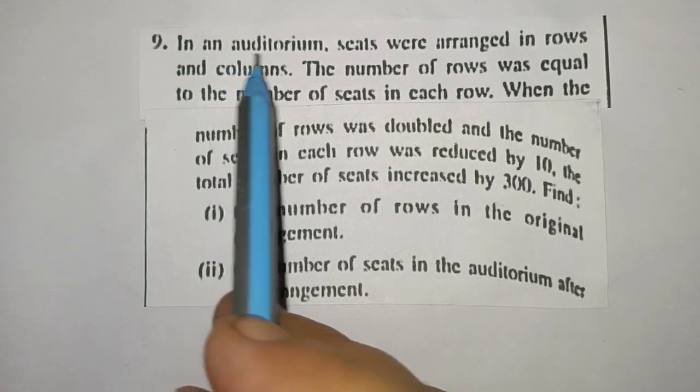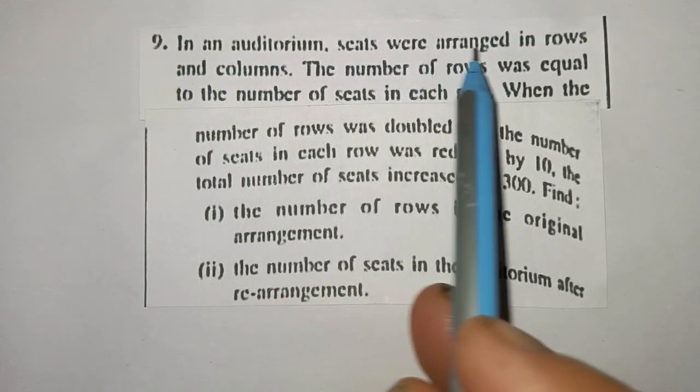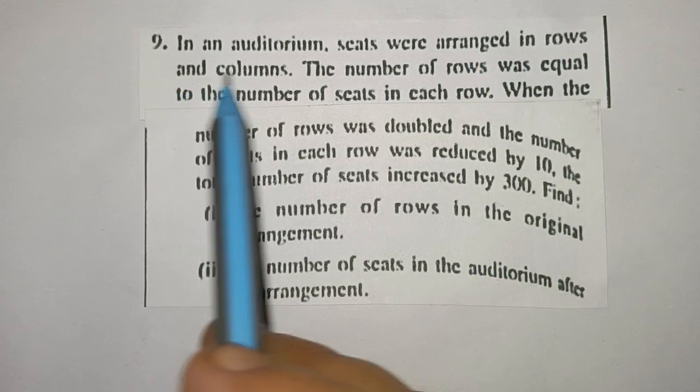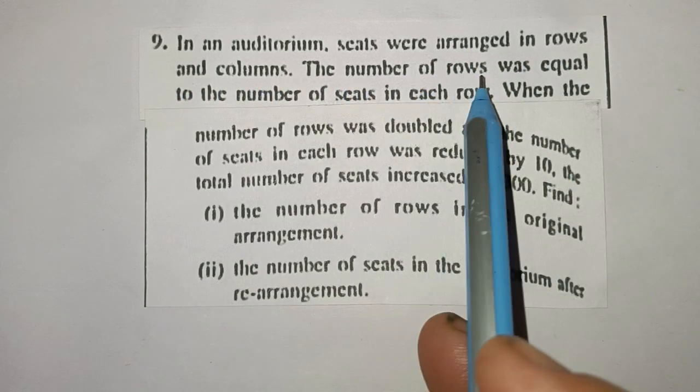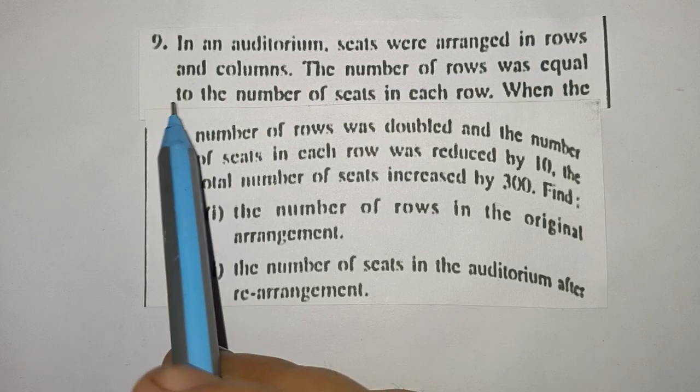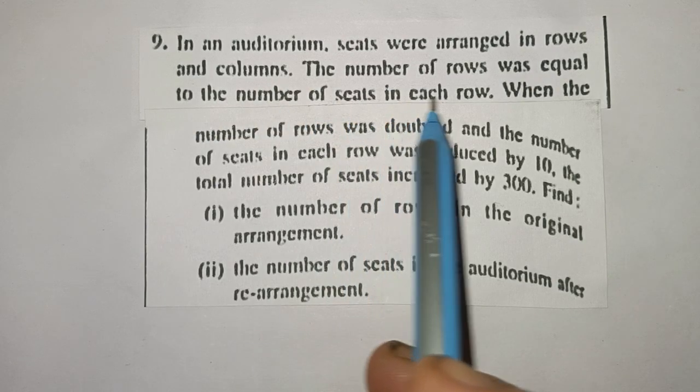Question number 9. In an auditorium, seats were arranged in rows and columns. The number of rows was equal to the number of seats in each row.